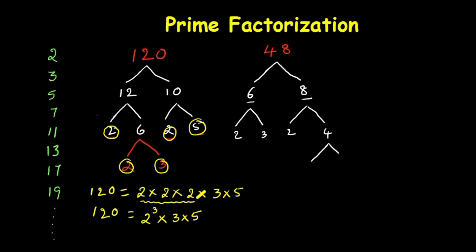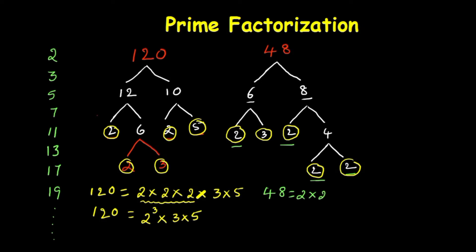Now 8 can be written as 2 times 4, and this 4 can be written again as 2 times 2, because 4 is not a prime number. Looking at the list, 2 is a prime number, 3 is a prime number, and the remaining 2s are also prime numbers. So 48 can be written as 2 times 2 times 2 times 2 times 3. In exponential form, we have 2 to the power of 4 times 3.